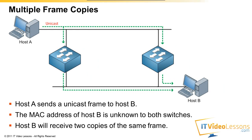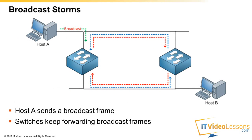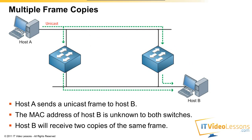Something else that could happen is what we call a multiple frame copy. In this example, the two switches don't know about the MAC address of Host B on the bottom right. So Host A is going to send something meant for Host B. It will reach both of these switches, but since they don't know the MAC address, they will flood it out of the ports. It's possible that Host B on the bottom right will receive the same frame twice. That could be a problem — it depends on the computer, but it's not a good thing.